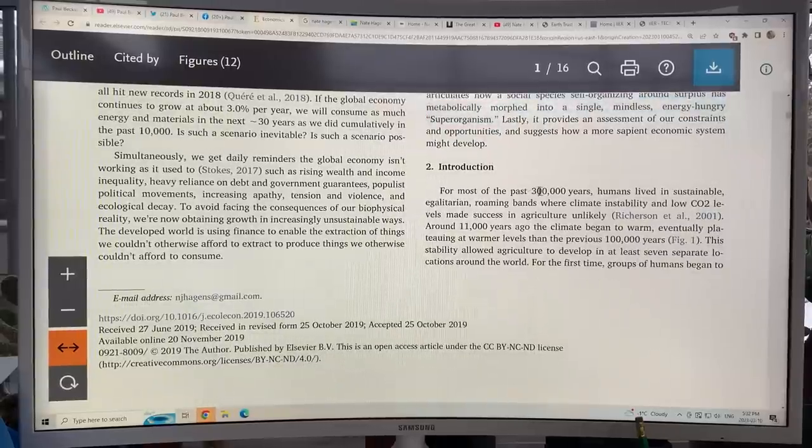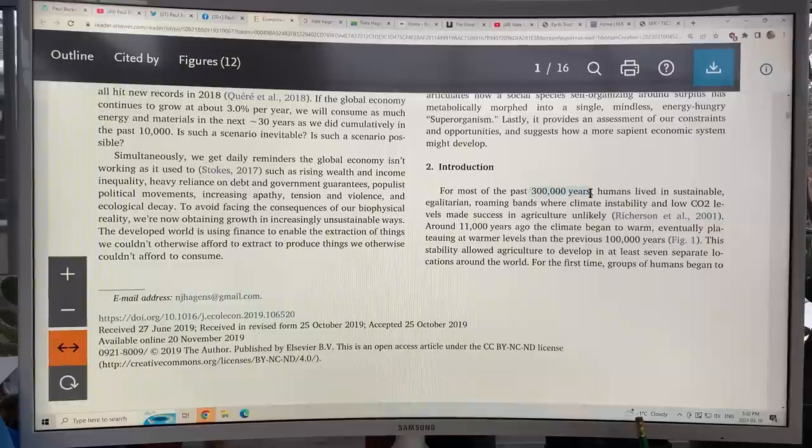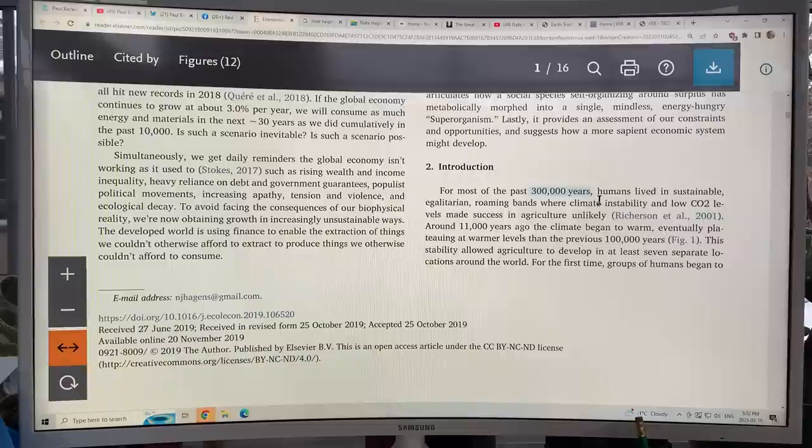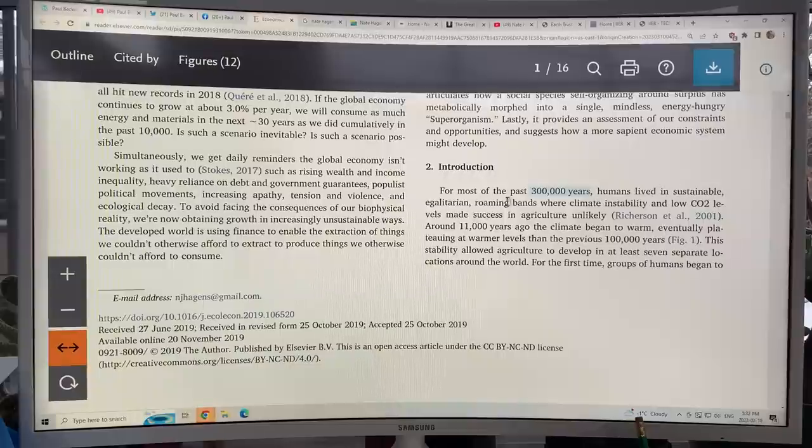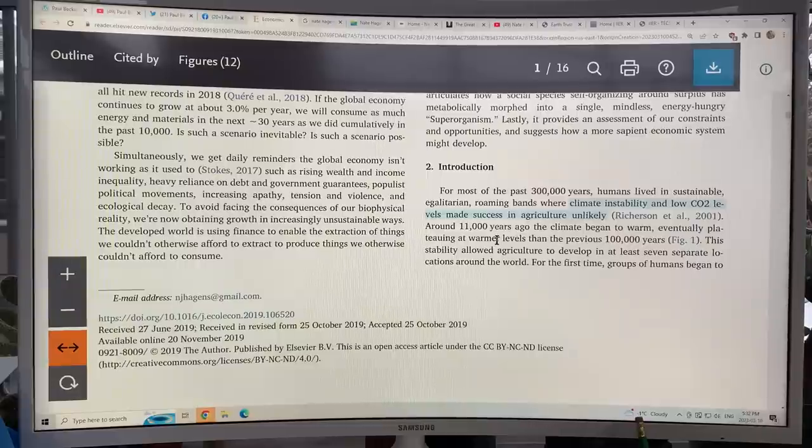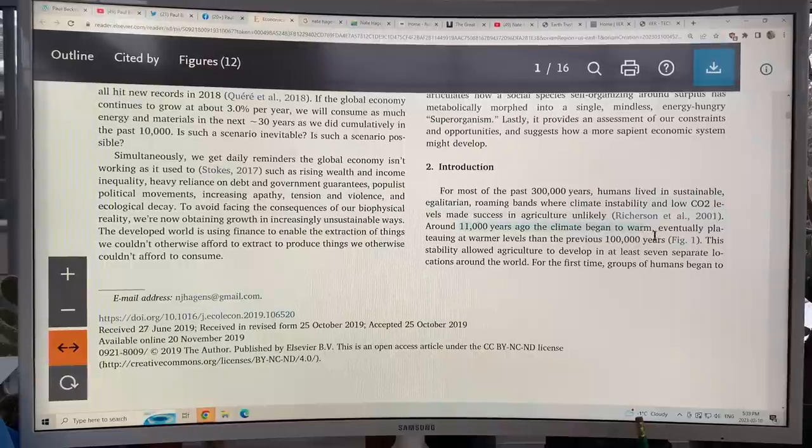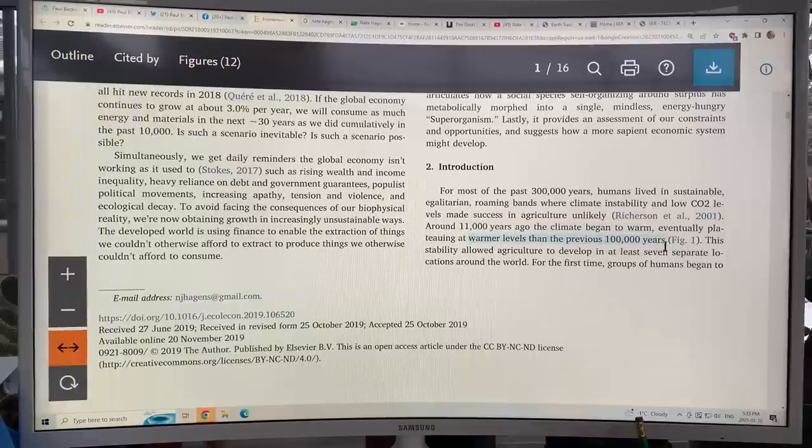So there's a bit of history. Most of the past 300,000 years when homo sapiens sapiens evolved, we've lived in a sustainable, egalitarian, so everybody's equal, roaming bands where climate instability and low CO2 levels made success in agriculture unlikely. The peak of the last ice age was 21,000 years. About 11,000 years ago, the climate began to warm. This is called the Holocene period, eventually plateauing at warmer levels than the previous 100,000 years. So this allowed agriculture to develop.